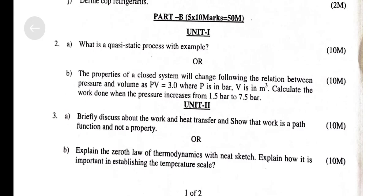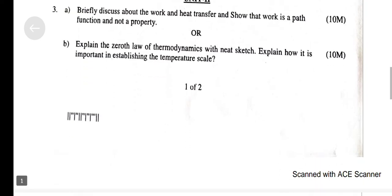What is a quasi-static process? Give an example. The properties of a closed system change following the relation between pressure and volume as PV = 3.0, where P is in bar and V is in m³. Calculate the work done when the pressure increases from 1.5 bar to 7.5 bar. Briefly discuss work and heat transfer and show that work is a path function and not a property. Explain the zeroth law of thermodynamics with a neat sketch and explain how it is important in establishing the temperature scale.